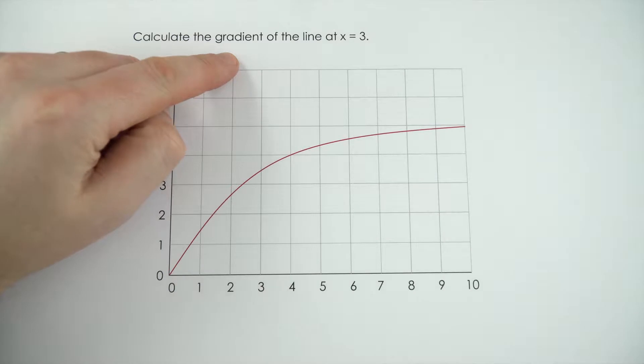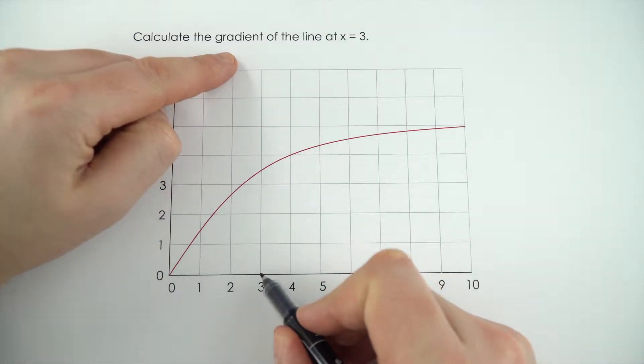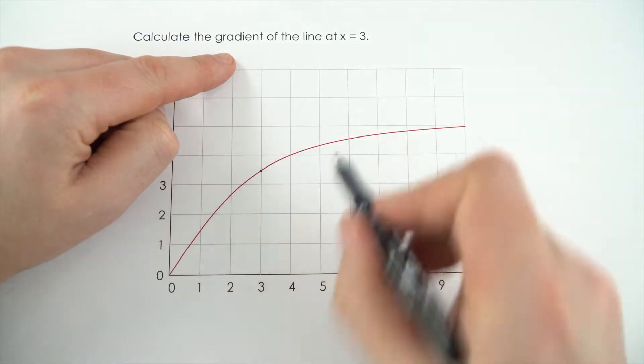In this example, we need to calculate the gradient of the line when x is equal to 3. So this is going to be this point here on that curve.